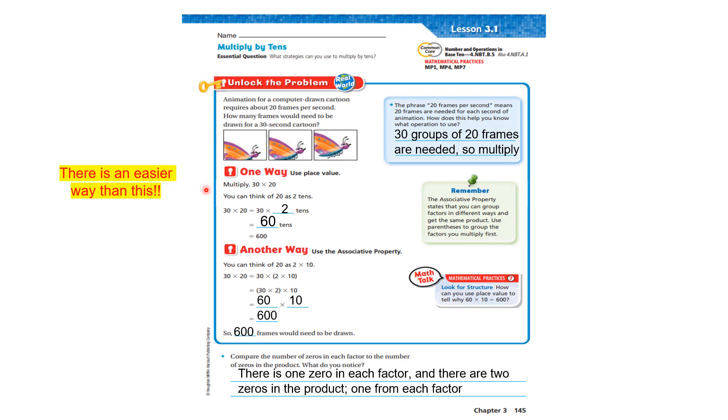Multiply 30 times 20. You can think of 20 as two tens. So we could say 30 times 20 equals 30 times two tens. What does 30 times two tens equal? 60 tens. What is 60 tens? 600. So 30 times 20 equals 30 times two tens, which is 60 tens, which equals 600. That's one way.